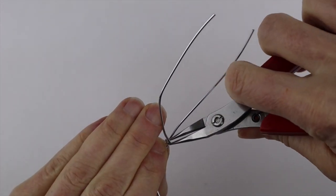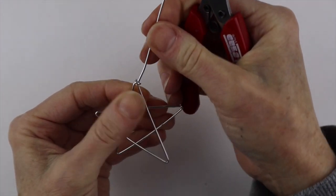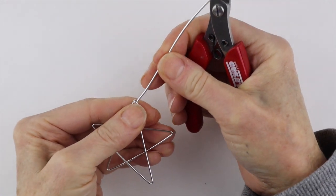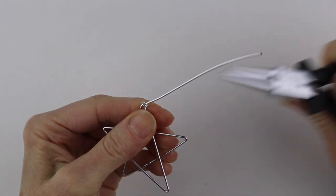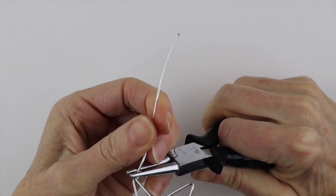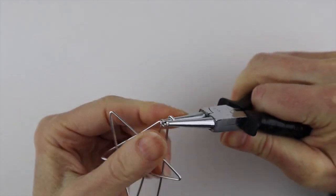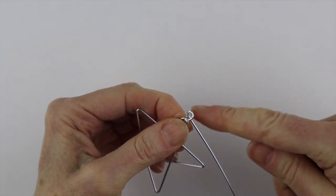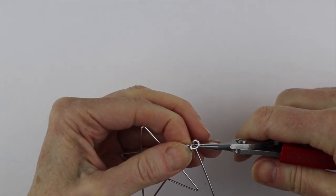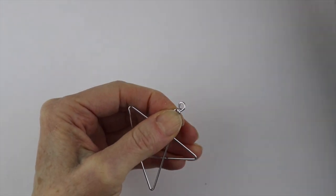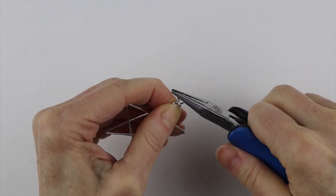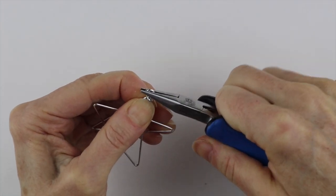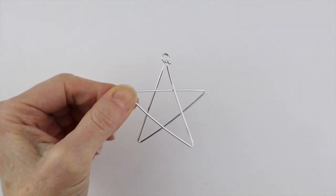Then you want to form a loop at the top to hang it so we're just going to get our larger round pliers and form the loop and you can just twist it around if you want or just simply clip it off and push it in so it's flush and there's the first star.